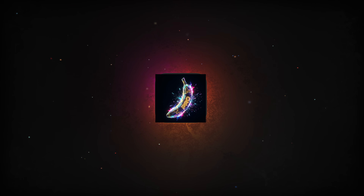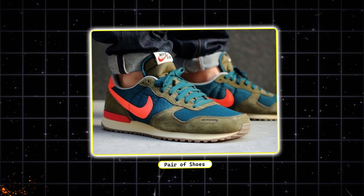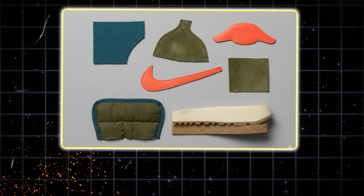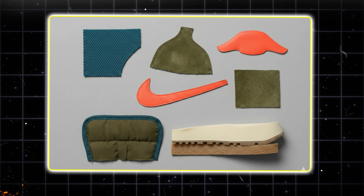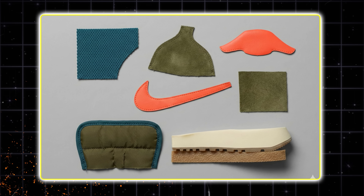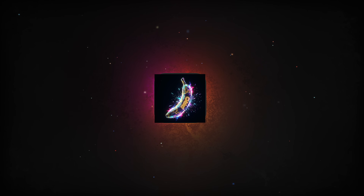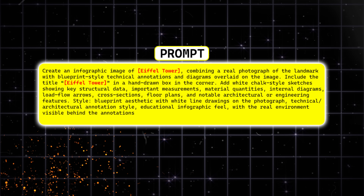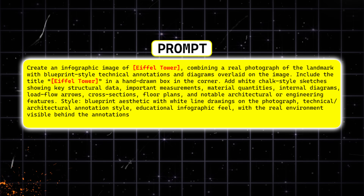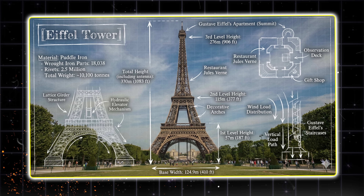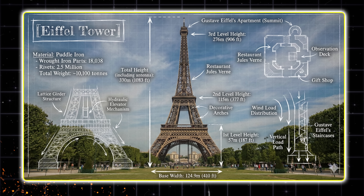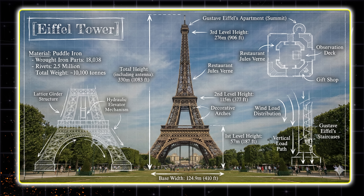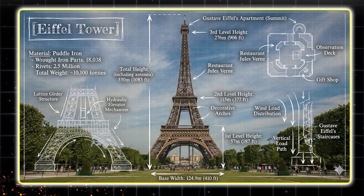Next is bonus trick number three. If you upload a product photo — like this pair of shoes — and enter this simple prompt, Nano Banana Pro instantly breaks the product apart into a clean flat lay pattern sheet, just like this. Now let's move to bonus trick number four. If you use this prompt and just replace 'Eiffel Tower' with any monument you want, Nano Banana Pro creates a stunning architectural infographic — the real photographic view of the landmark combined with blueprint lines, technical notes, structural diagrams, material stats, and engineering sketches.